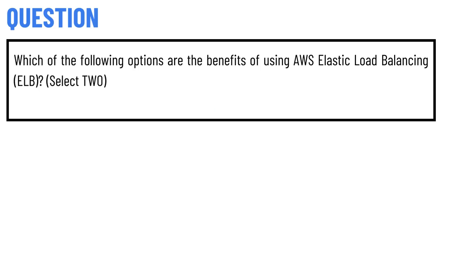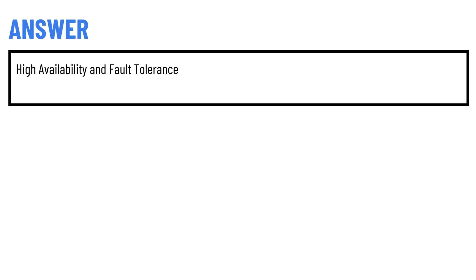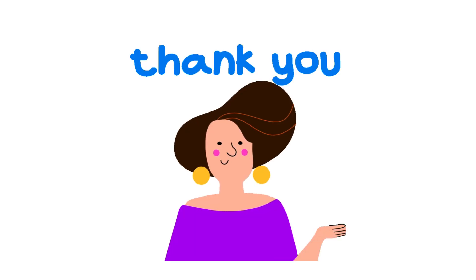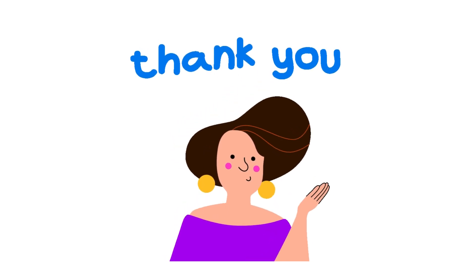Our today's question is: which of the following options are the benefits of using AWS Elastic Load Balancing (ELB)? Select two. The correct answer to the question is high availability and fault tolerance.